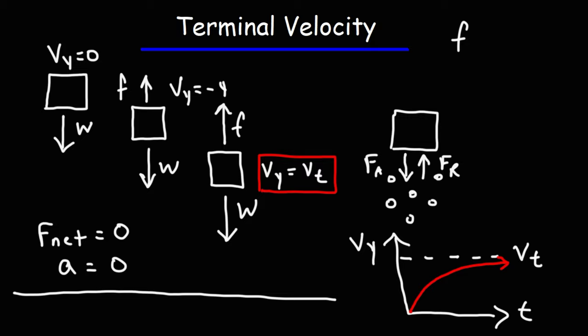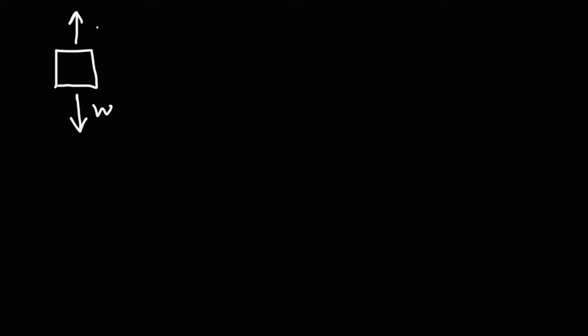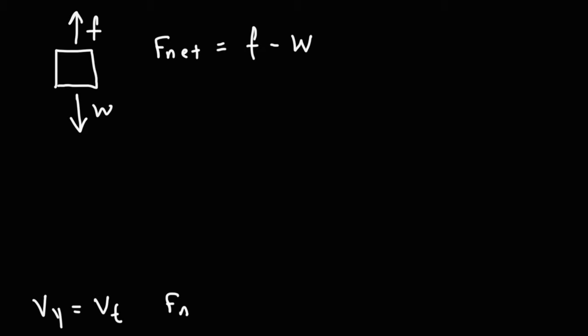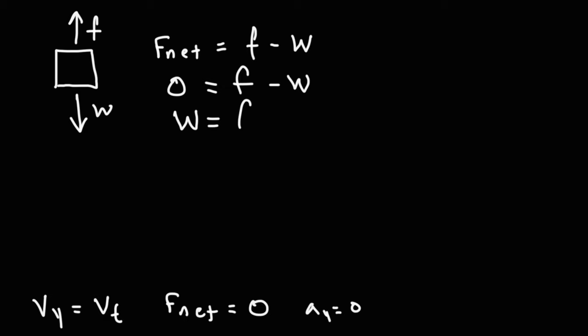Now let's talk about the equations we need to calculate it. Here we have the weight force and here we have air resistance. The net force is going to be the difference between these two — F minus W. When the vertical speed reaches its terminal value, we know the net force is equal to zero, so there's no more acceleration. So once we achieve terminal velocity, the weight force is equal to the air resistance. The weight force is mg.